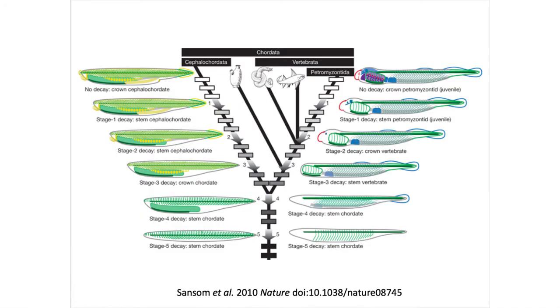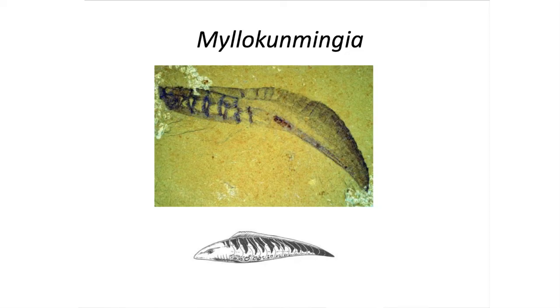One of the more interesting discussions that has emerged in recent years is that through the fossilization process, many of the soft tissue structures that help us define chordates are often lost. With this loss, paleontologists are more likely to recognize these animals as more primitive than they actually were in life. The exquisite detail of these fossils from Xinjiang does show that a new and diverse group of animals were emerging during the early Cambrian.